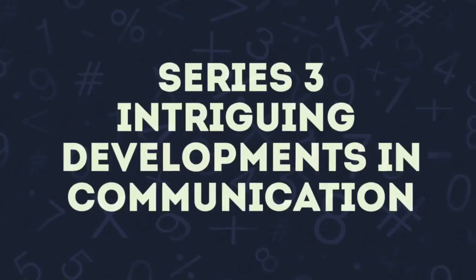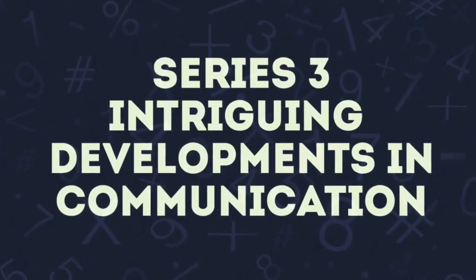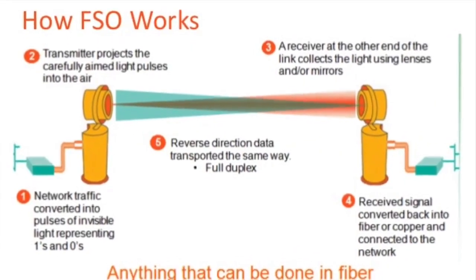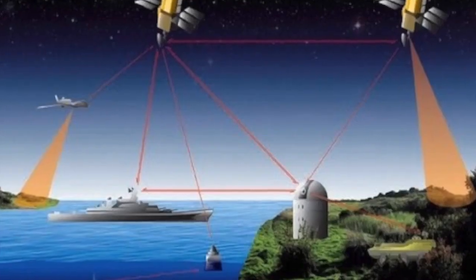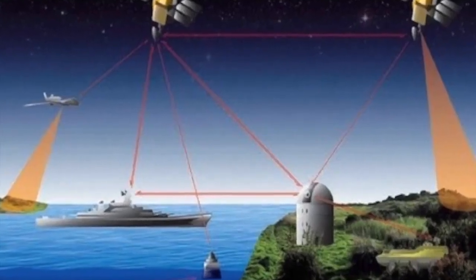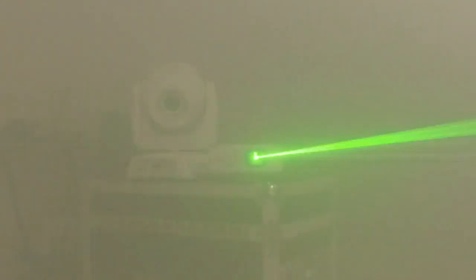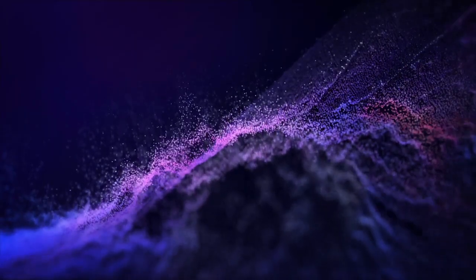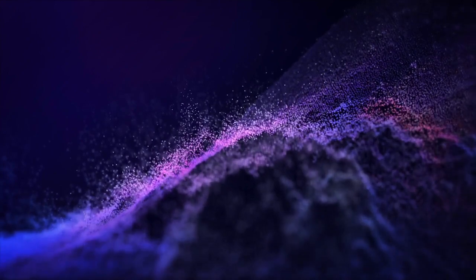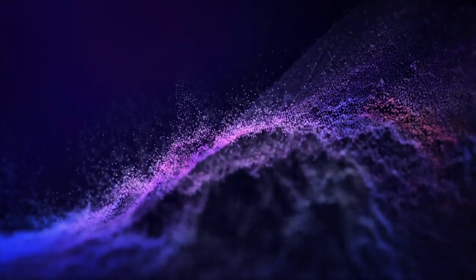Hey folks, welcome to Ham Connect. You are listening to the third series interviewing developments in communication. In this episode, we will be exploring FSO — that is Free Space Optics. FSO is a line-of-sight technology that uses lasers to provide optical bandwidth connections, or alternatively, FSO is an optical communication technique that propagates light in free space.